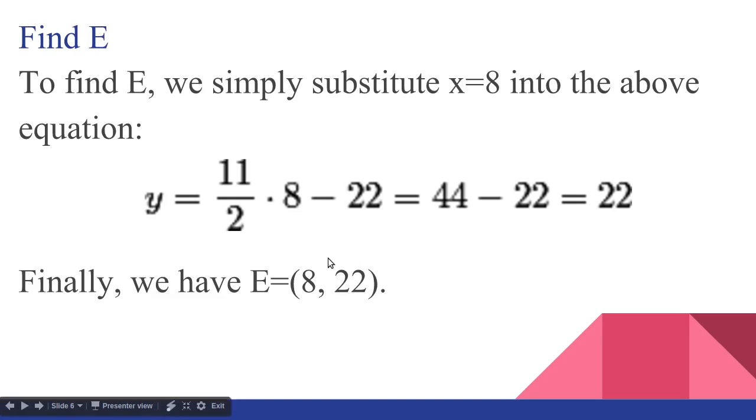And then we find E. So to find E, we know that the X-coordinate is 8 because the problem said so. So we substitute 8 into this equation. So we get Y equals 11 halves times 8 minus 22. That's 44 minus 22, and that's 22. So we get E equals (8,22).